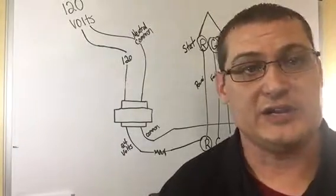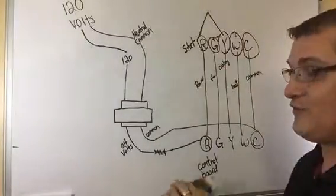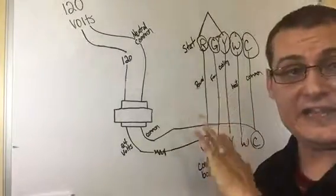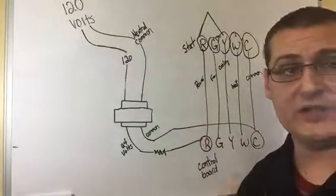And then the thermostat, with a call for cooling, will bring on Y and Y and G are tied together. They both come on at the same time. That covers pretty much everything on a one-stage heat, one-stage cool thermostat and gives you an idea of what's happening within the thermostat.